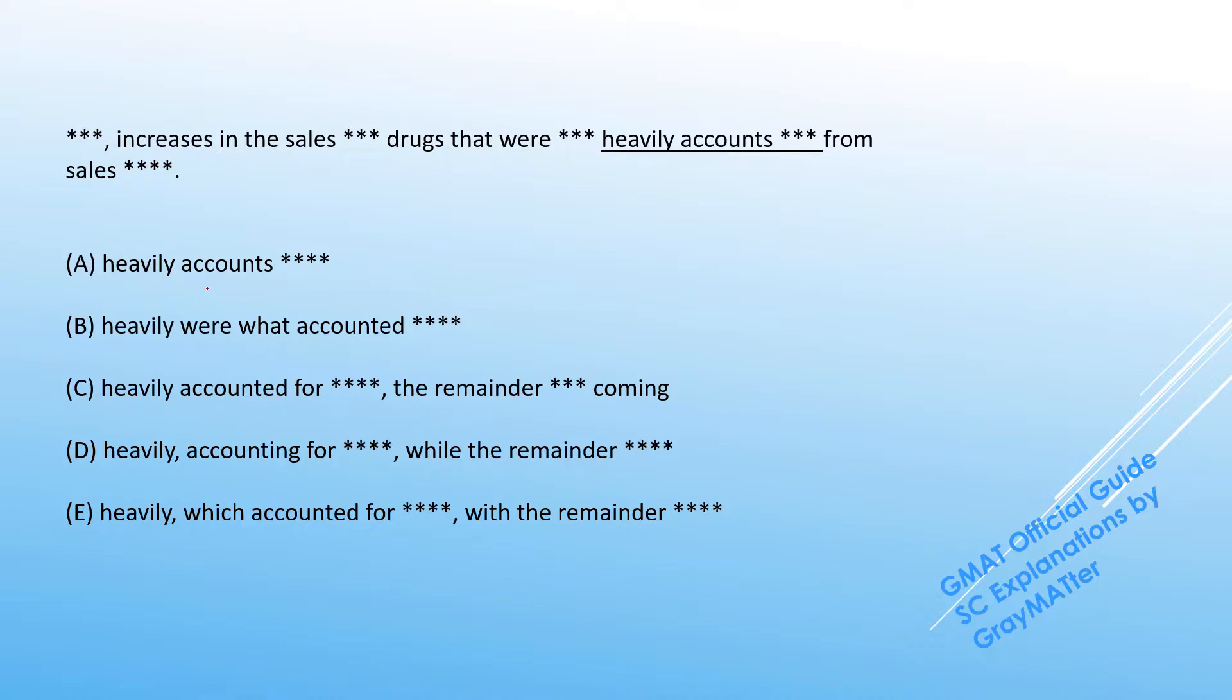The beginning of the answer choices in this question proves to be the best attack point because there are significant differences right here. So this will be the first red flag because 'accounts' is the verb here.